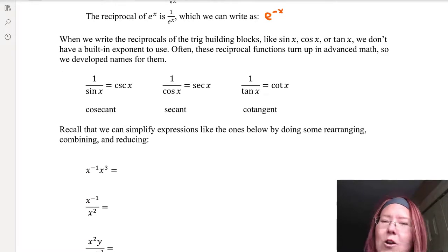1 over sine x is written as CSC X, which stands for cosecant. We read it as cosecant of x, even though we write down CSC.